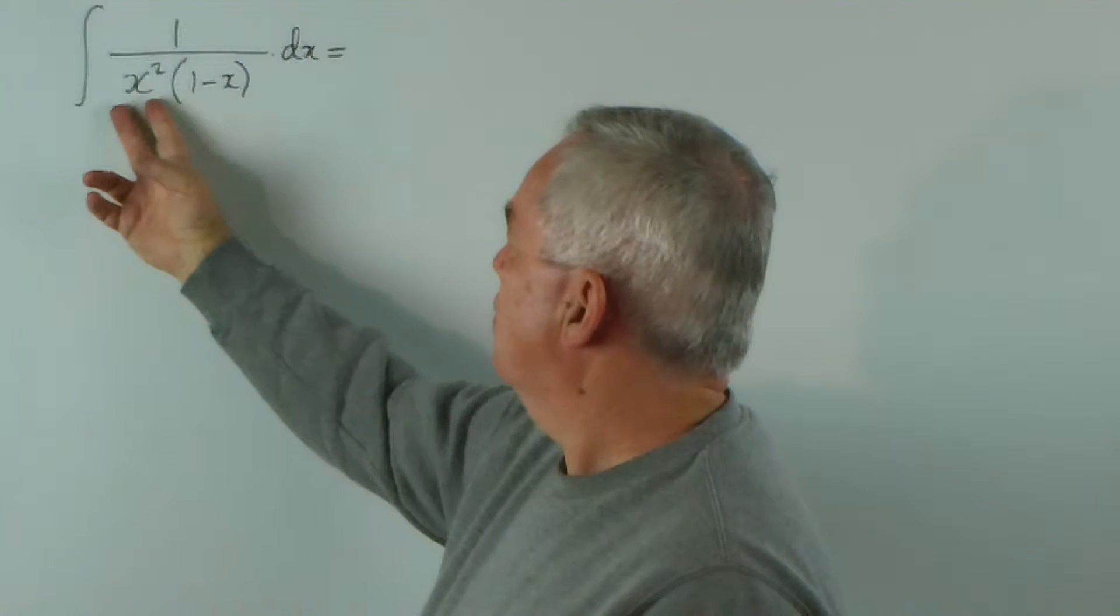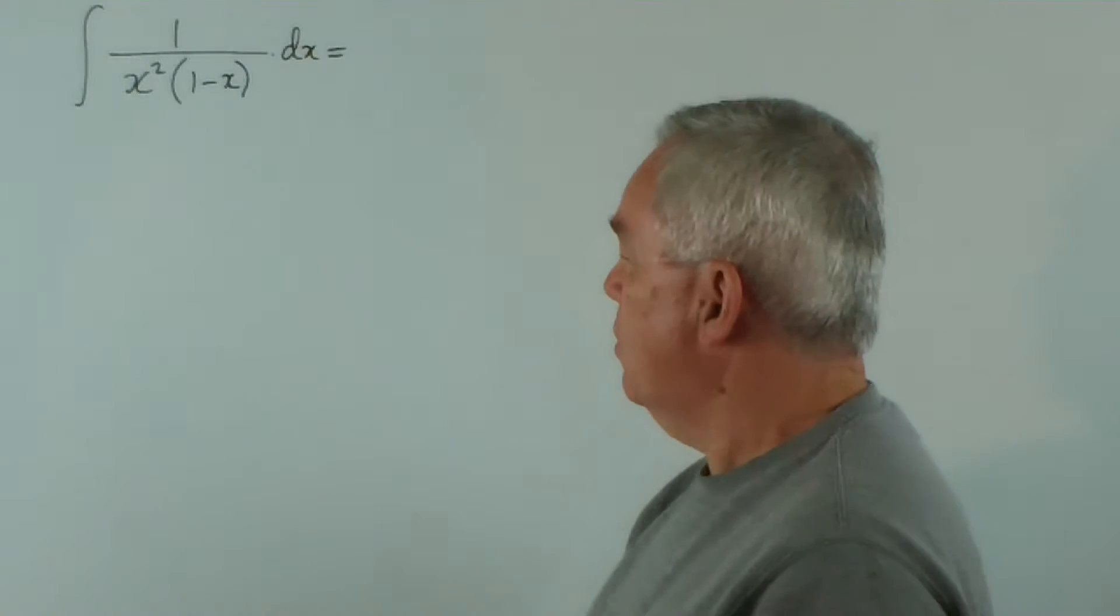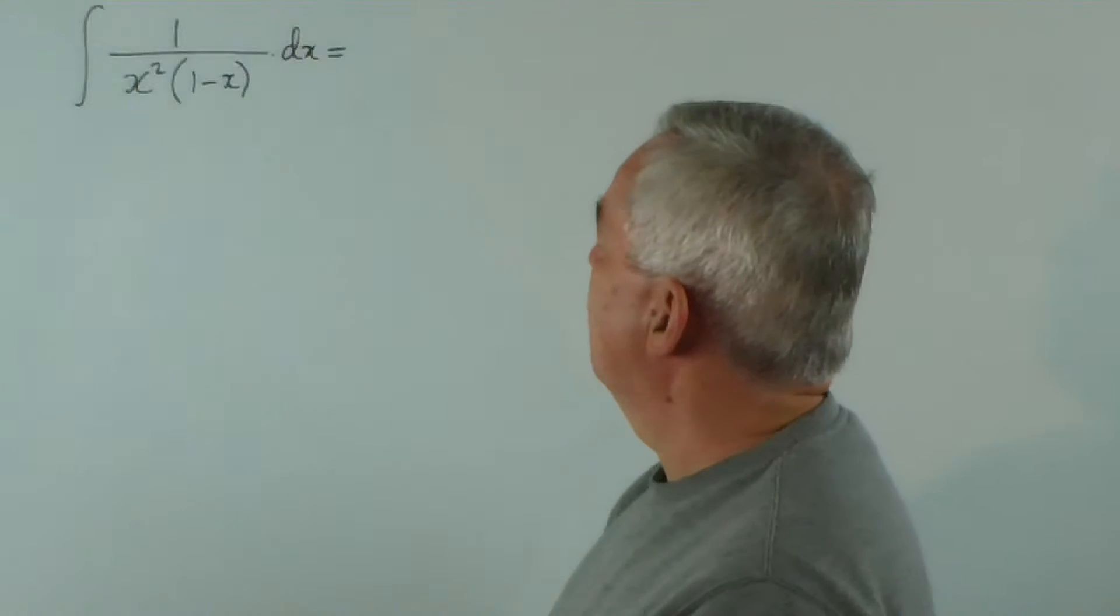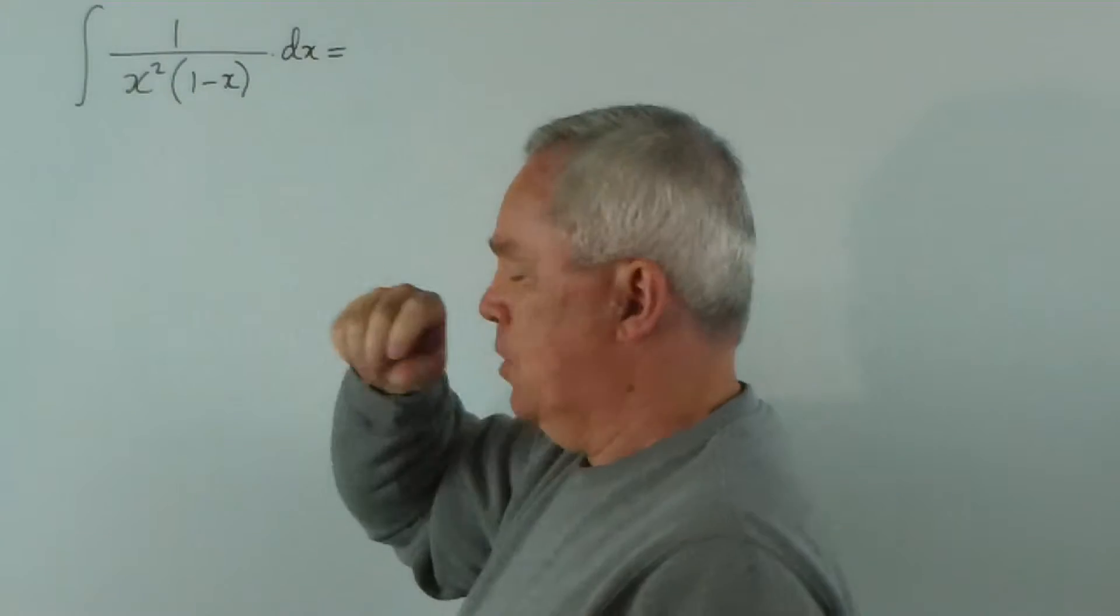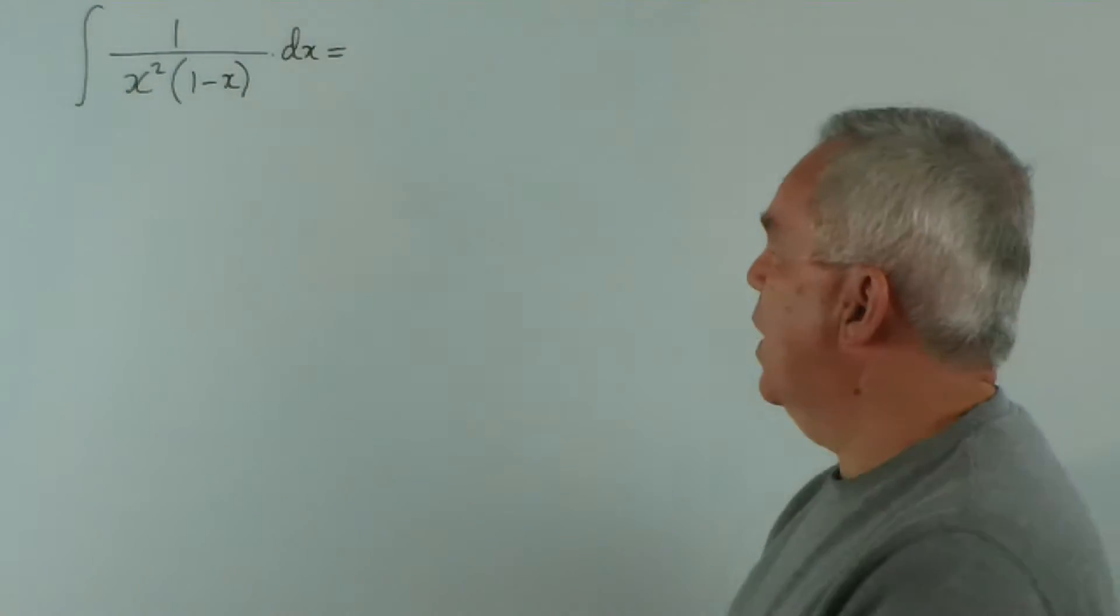We have a product of two polynomials on the bottom, two fairly simple polynomials, and a smaller power on the top, a considerably smaller power.